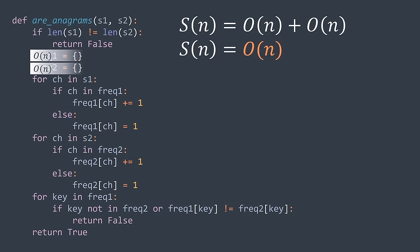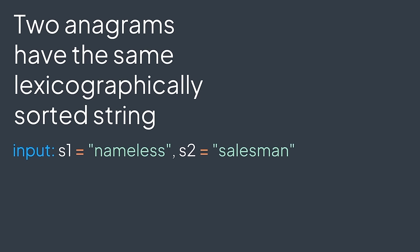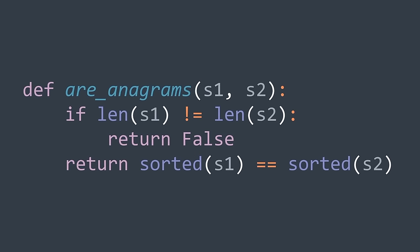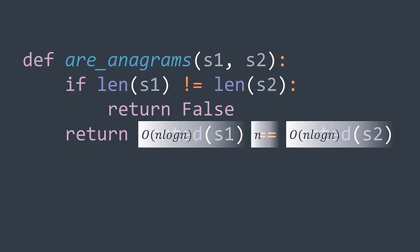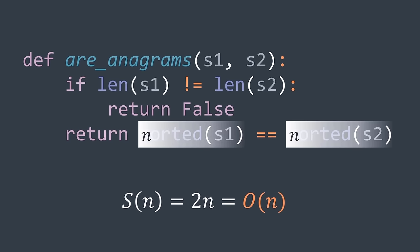We still have another solution: two anagrams have the same lexicographically sorted string. For example, sorting both 'nameless' and 'salesman' gives 'a e l m n s s'. So in the second solution, we just sort both strings and compare the results. In code, after the length equality check, we return sorted(s1) == sorted(s2). Sorting a string of n characters costs O(n log n); doing it twice plus O(n) for comparing gives O(n log n) time complexity. For space complexity, we have O(n) for each sorted result — O(n) space complexity.